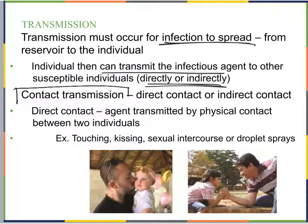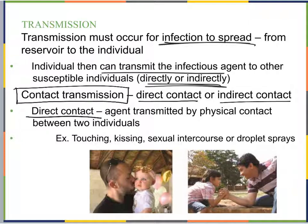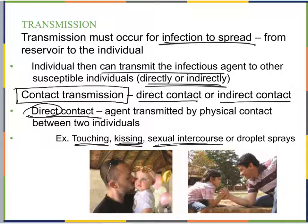The first type we'll discuss is contact transmission, which can be direct or indirect. Direct contact transmission is when the agent is transmitted by physical contact between two individuals — directly contacting another person. For example, someone coughs on their hand and then shakes hands with another person. Kissing, sexual intercourse, or droplet sprays — such as when someone coughs while talking next to another person — are all examples of direct contact transmission.